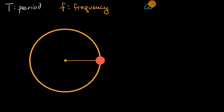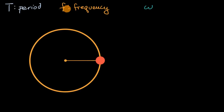Since there's no little arrow on top, you can view lower case omega as the magnitude of angular velocity. But first, what is period, and what is frequency? Well, period is how long does it take to complete a cycle.